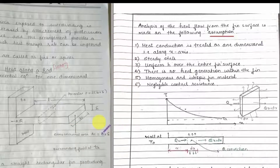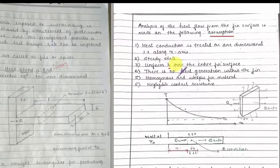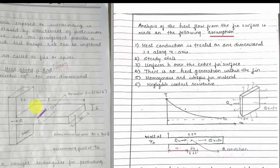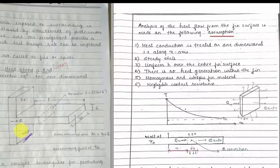The next very important assumption is steady state. Third, uniform heat transfer coefficient over the entire fin surface — the fin is exposed to environmental conditions and the value of h is constant throughout. The next assumption is that there is no heat generation within the fin. Fifth, the value of k, the thermal conductivity of the fin material, is constant throughout. The contact resistance is very negligible, so we are neglecting it. One more assumption: radiation is not taken into consideration, as it would make the analysis more difficult.